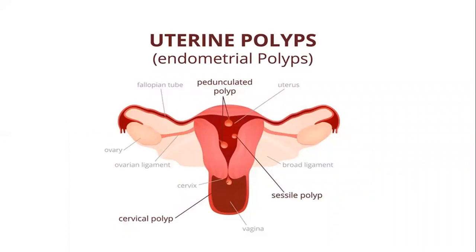Another condition is uterine polyps, also called endometrial polyps. These are extra tissue that grows in the endometrium lining inside the uterus. Like a growth or a tag, it is extra tissue — a uterine polyp is all within the lining of the uterus, and it can also relate to fibroids. Hormones are responsible for that.